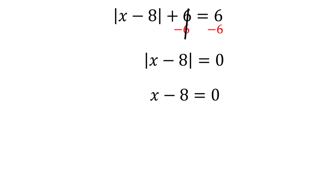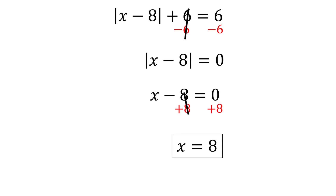We don't have to worry about having two solutions if our absolute value equation is equal to 0. Adding 8 to both sides, we get x is equal to 8 as our solution. That completes our video over absolute value equations.